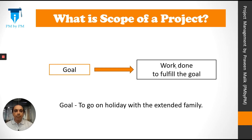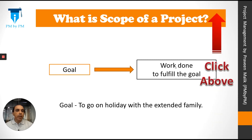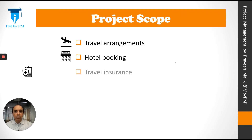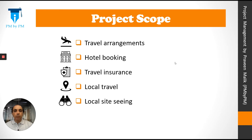Do you remember our example project from the knowledge area video? Our goal was to go on a holiday with the extended family — you can click on the card above to look at the earlier video. So what kind of work will we do to fulfill this goal? A project scope could include five pieces of work: travel arrangement, hotel booking, travel insurance, local travel, and local sightseeing.